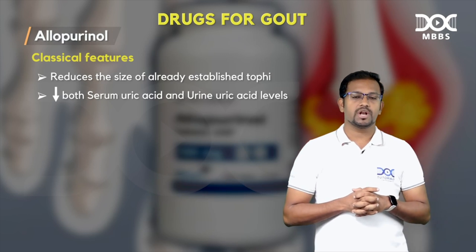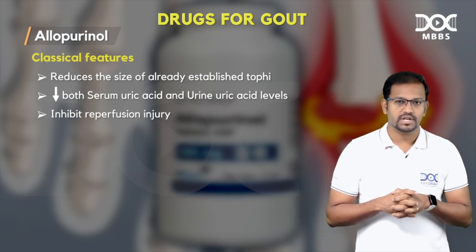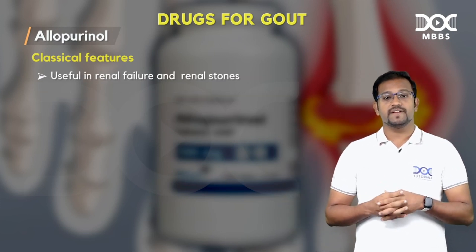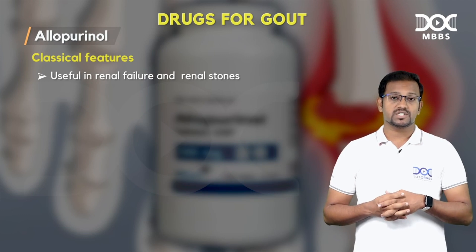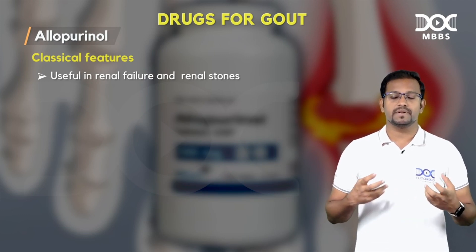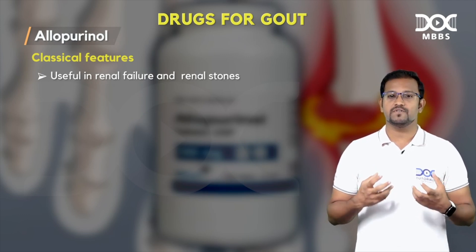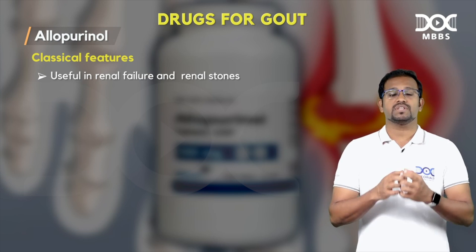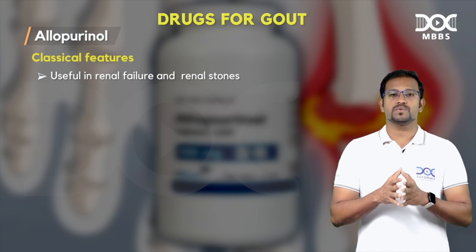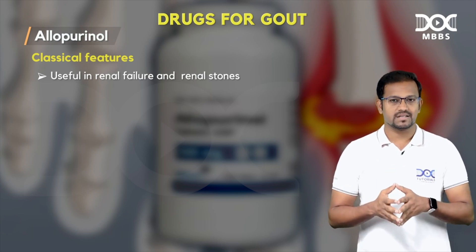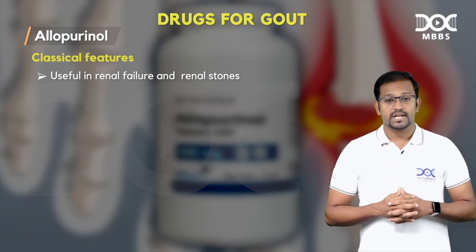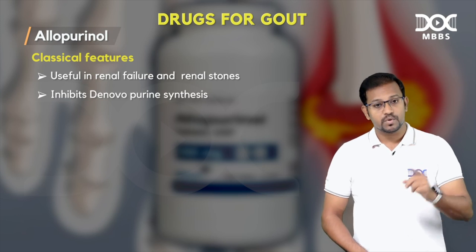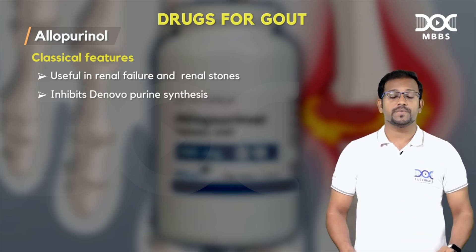The next point regarding allopurinol: it tends to inhibit reperfusion injury. It is useful in renal failure and renal stones because it is not primarily dependent on the kidneys — it is based on enzyme inhibition which happens in every individual cell in the body. It not only inhibits this salvage pathway but also inhibits de novo purine synthesis.